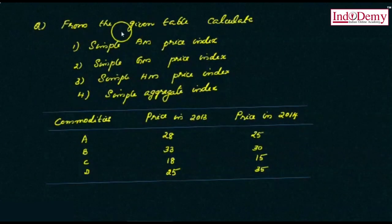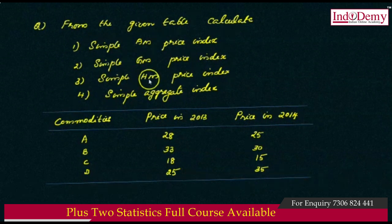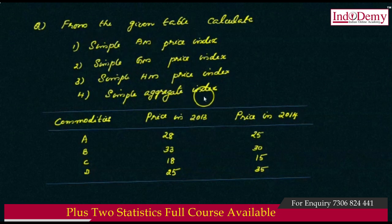Question: From the given table, calculate the simple arithmetic mean price index, geometric mean price index, harmonic mean price index, and aggregative price index.